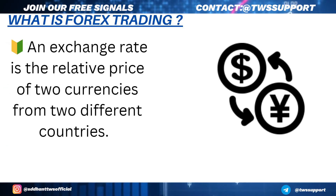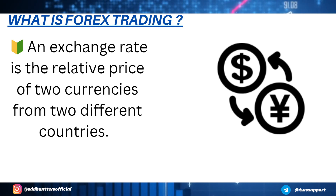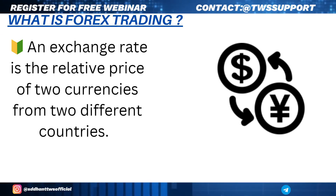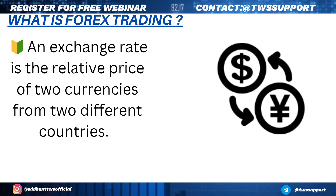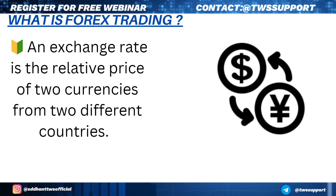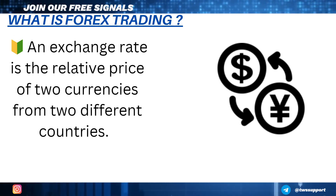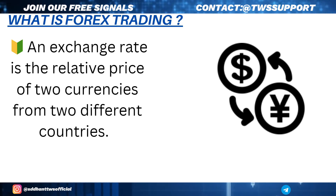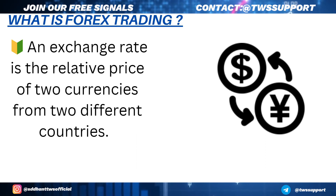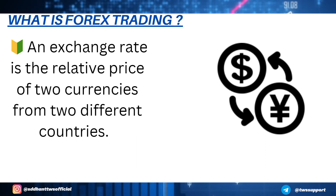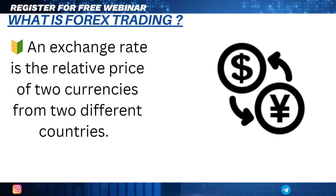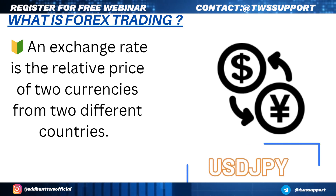The second point is Forex trading. Forex trading involves an exchange rate — the relative price of currencies from two different countries. These two currencies from different countries will form a pair. For example, dollar and Japan — if you see the dollar and Japan, then the pair will be USD-JPY.